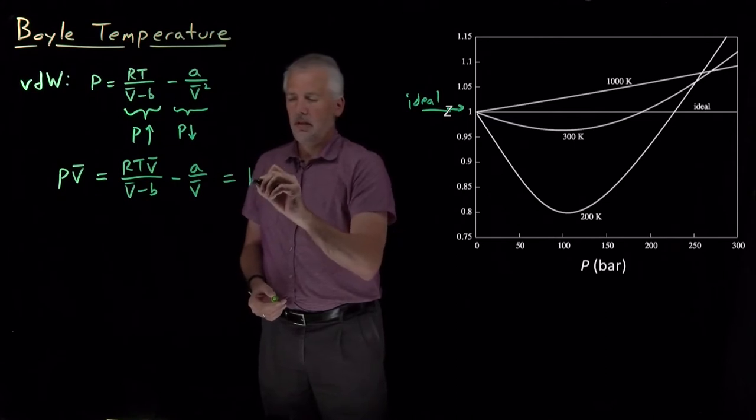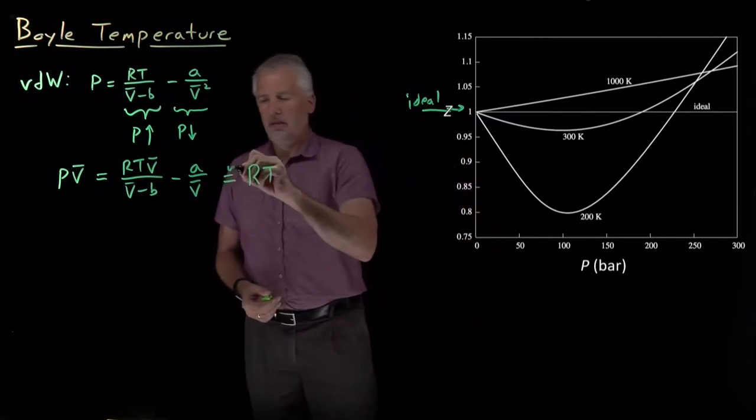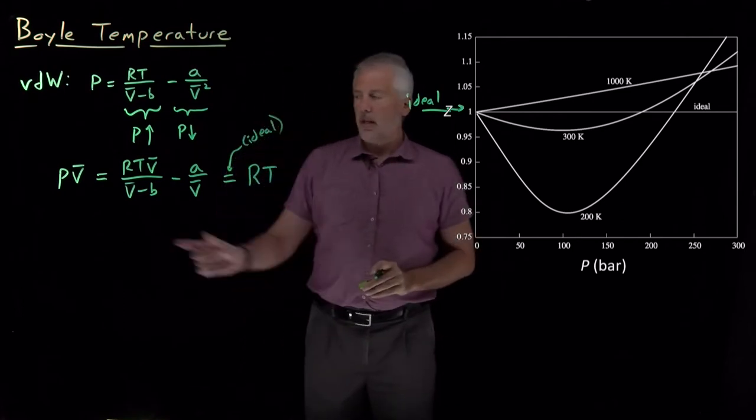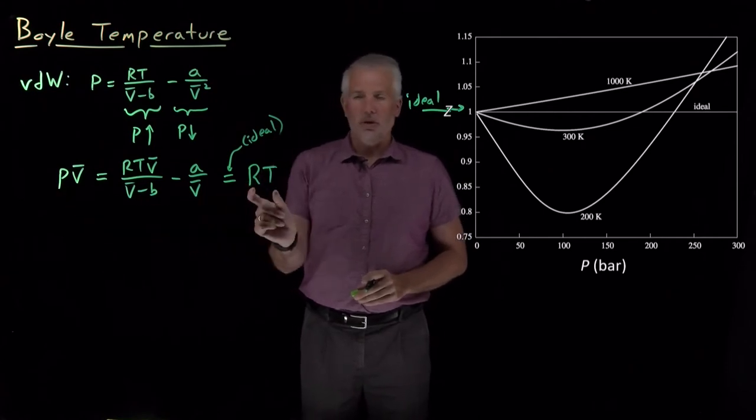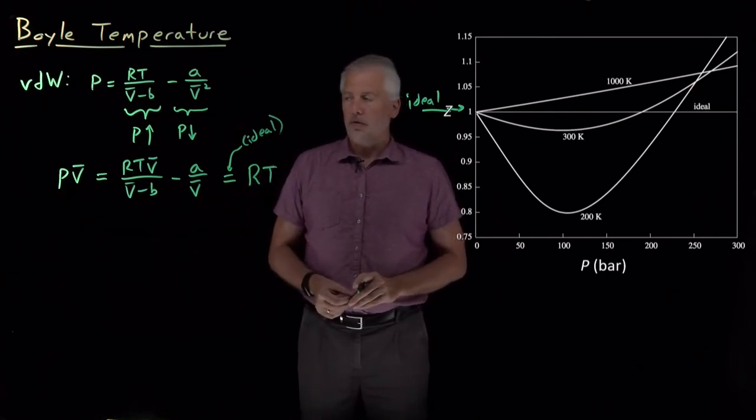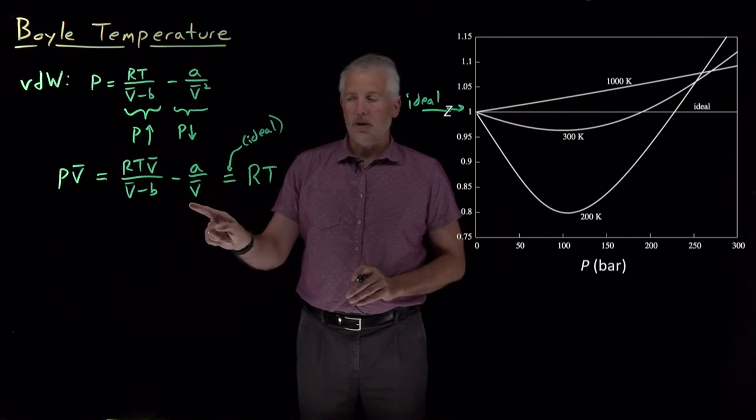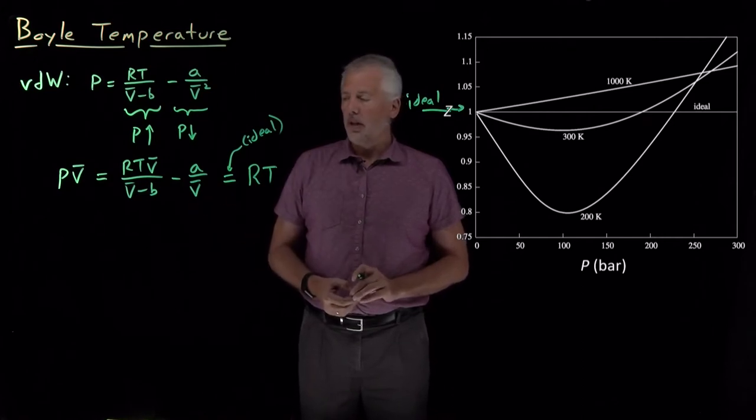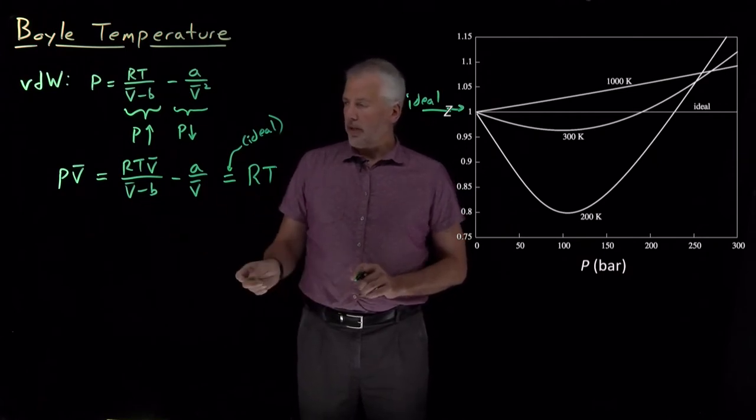If the gas is behaving ideally, then we know that PV equals NRT. PV bar is equal to RT for an ideal gas. So if the van der Waals gas is coincidentally behaving just like an ideal gas, then we'd expect the van der Waals value of PV bar to be equal to the ideal gas value of PV bar. So if I take these two expressions and set them equal to each other, we'll rearrange a little bit.